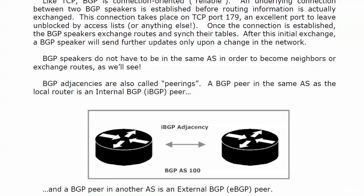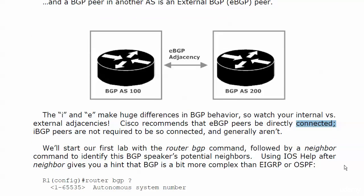Our adjacencies can be internal peering or external. A BGP peer in the same AS as the local router is an internal BGP peer — as we see here on the board, both routers are in AS100, that's an iBGP adjacency. A BGP peer in another AS is an external peer. Nothing difficult there, but you've got to watch that little 'i' and that little 'e,' because that's how it shows up in your BGP tables and diagrams throughout this section.